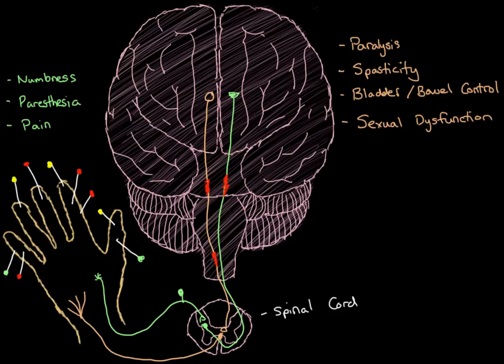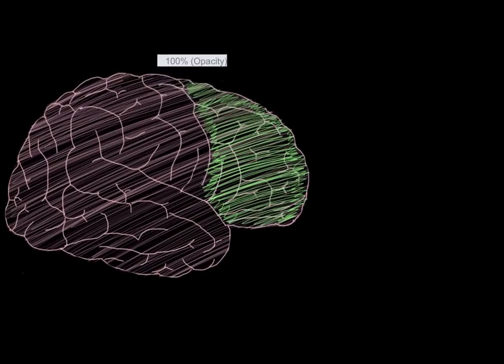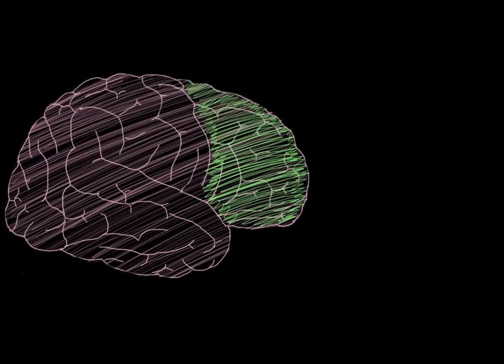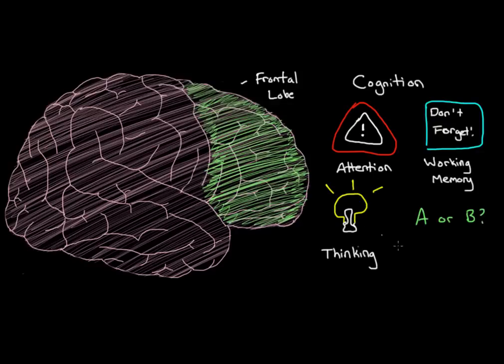Next, let's turn this brain around and talk a little bit more about some of the cognitive symptoms that people experience in MS. Now our brain is looking to the right. You'll see that I've already shaded in a part of the brain, and this part of the brain is simply known as the frontal lobe. What does the frontal lobe do? It's responsible for cognition. What are some cognitive behaviors? There's attention, working memory, thinking, and decision making.